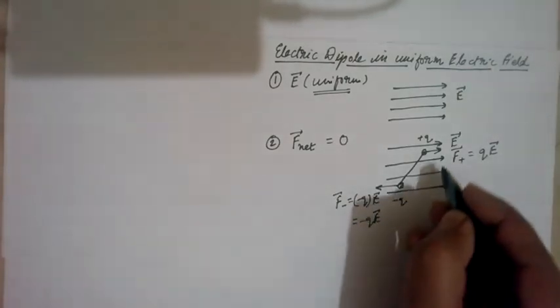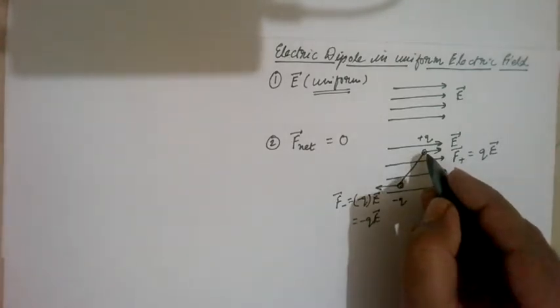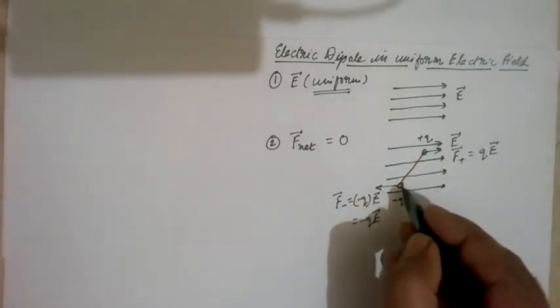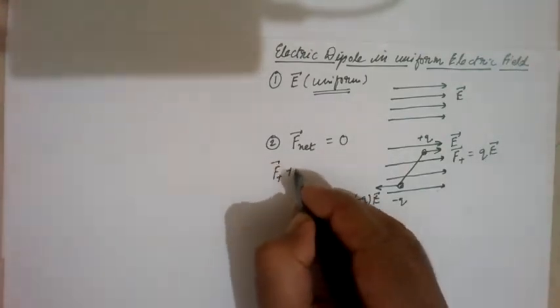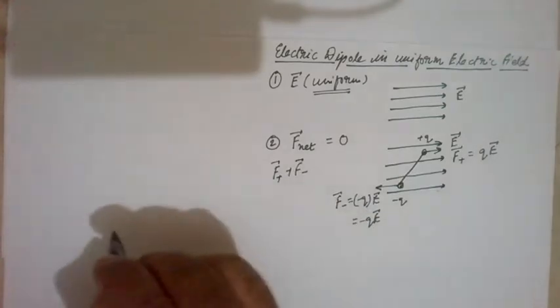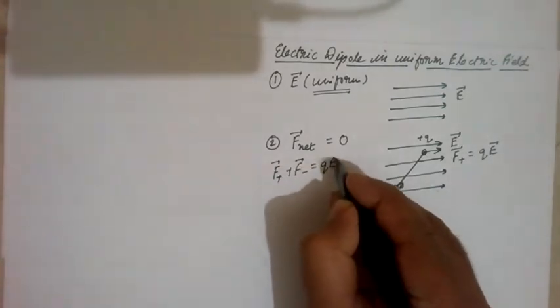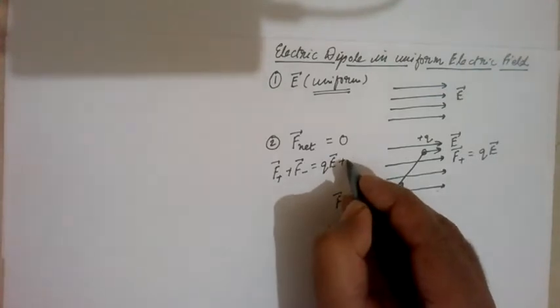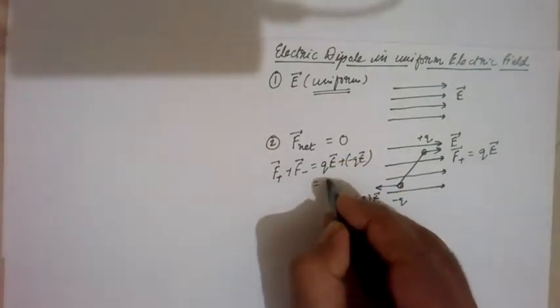Now what is the net force on dipole? It is the sum of forces on positive charge and negative charge, which is a vector sum. And this is QE plus minus QE which is zero.